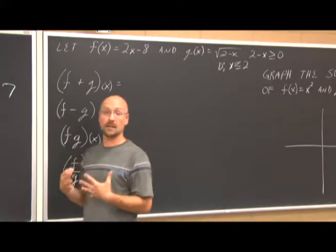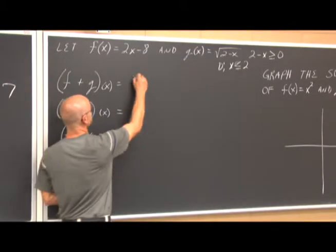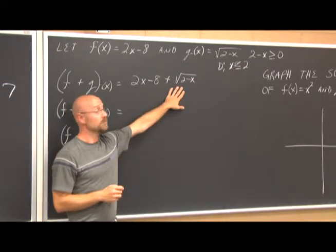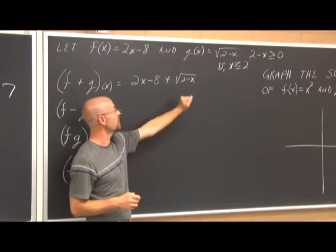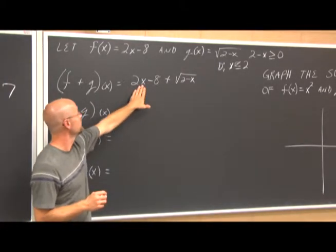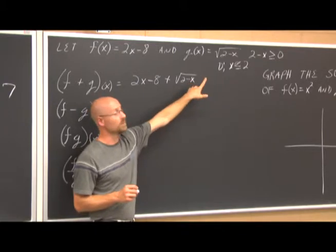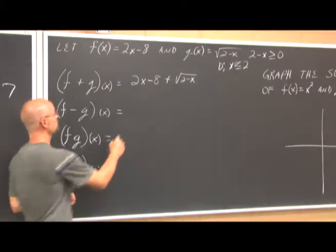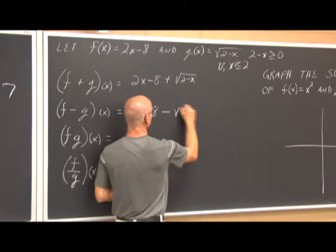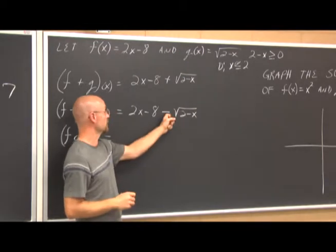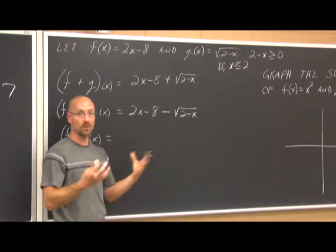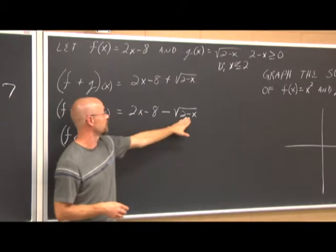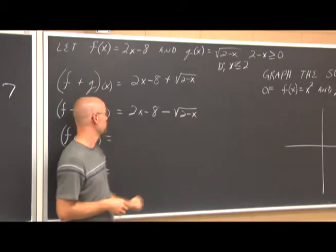Adding these functions: f plus g of x is 2x minus 8 plus the square root of (2 minus x). There are no like terms to combine, so that's the simplified result. The domain remains x ≤ 2, because the square root term still requires that restriction. For subtraction, f minus g of x is 2x minus 8 minus the square root of (2 minus x). The square root acts as a grouping symbol, and the domain still doesn't change — x ≤ 2.